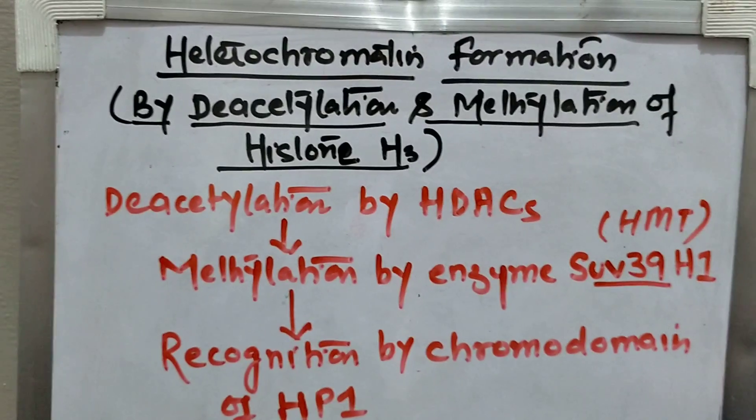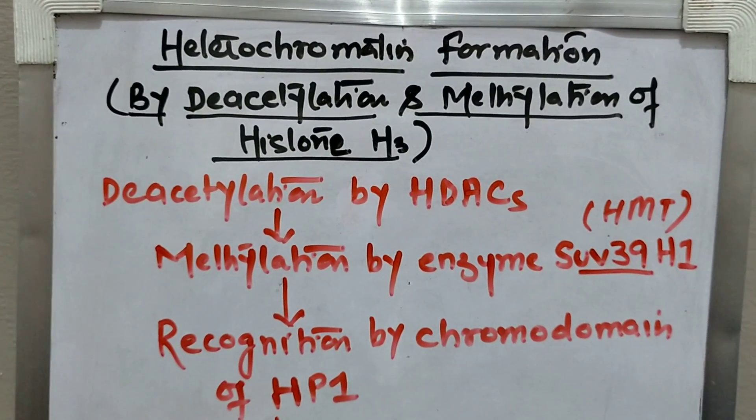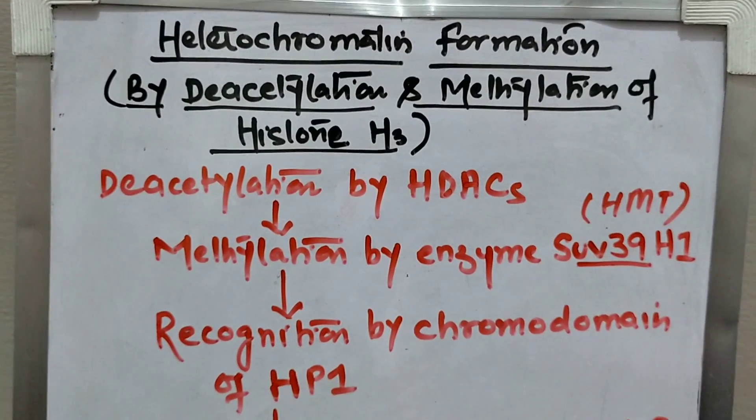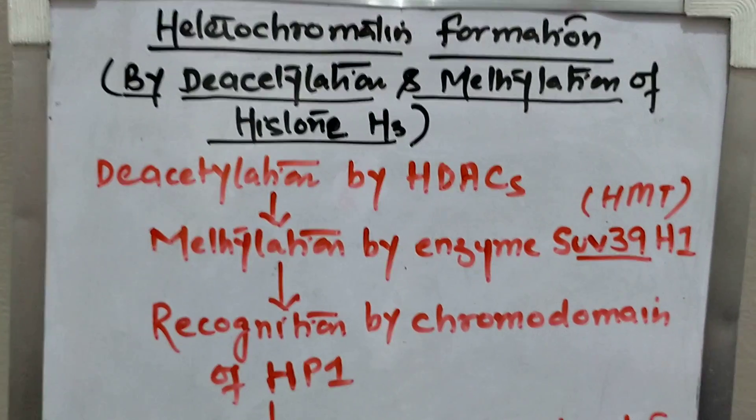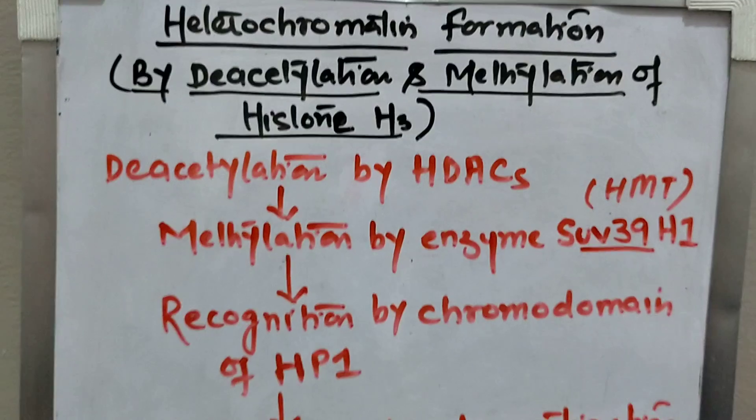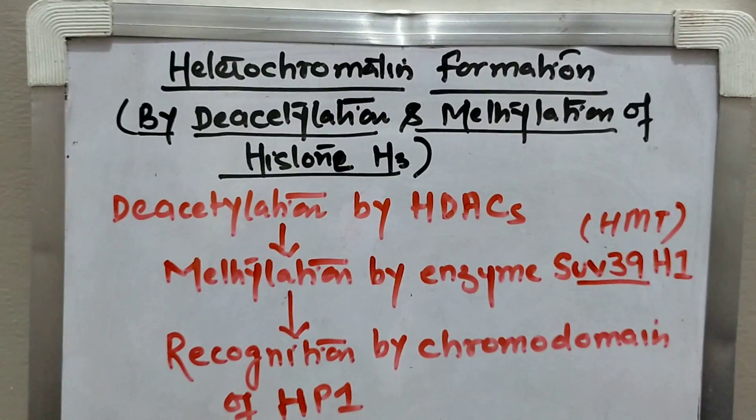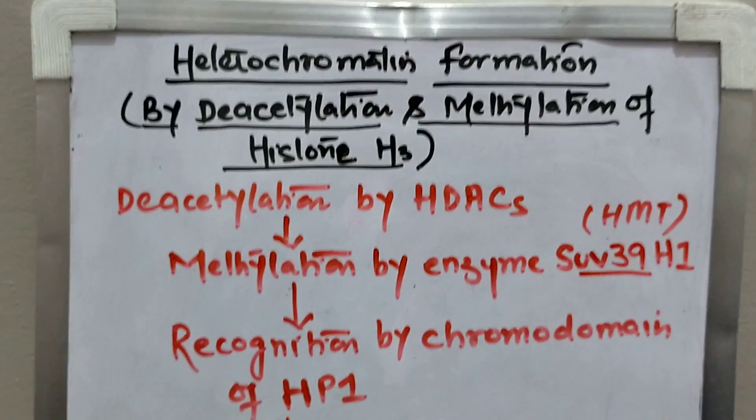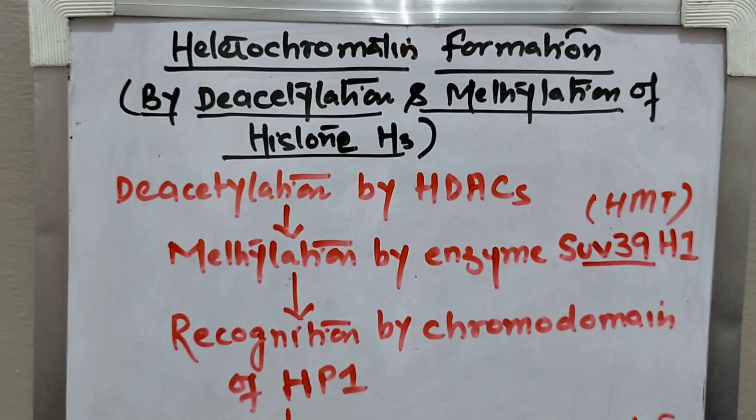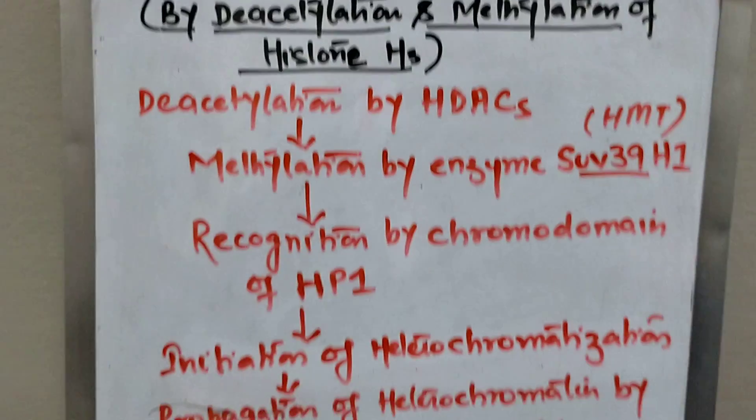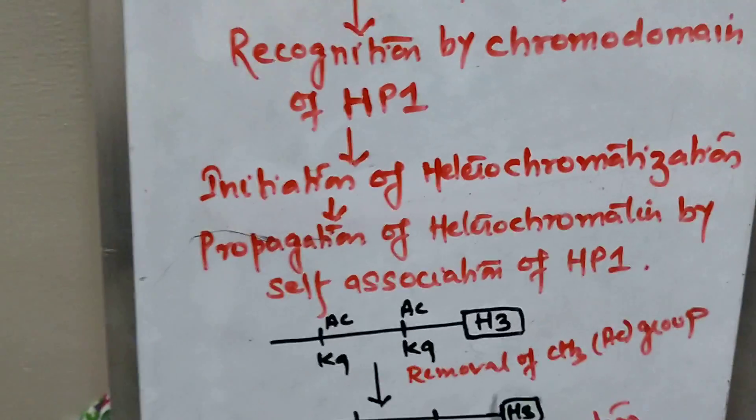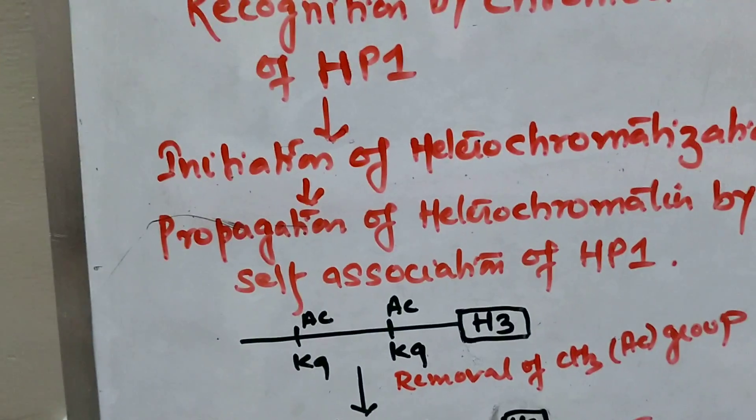How will we form this heterochromatin? The histone protein, histone H3 protein, is first deacetylated and then methylated. We know the chromatin which is active should be in acetylated condition, which we call euchromatin. You can see here in the diagram, this histone H3 at the ninth lysine position was acetylated previously when it was in euchromatin condition.